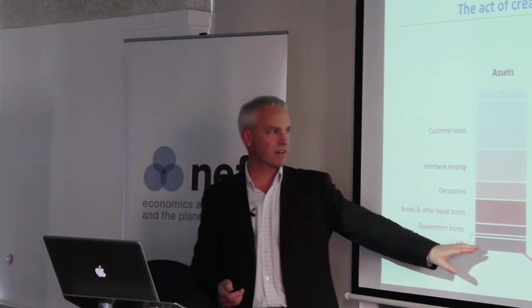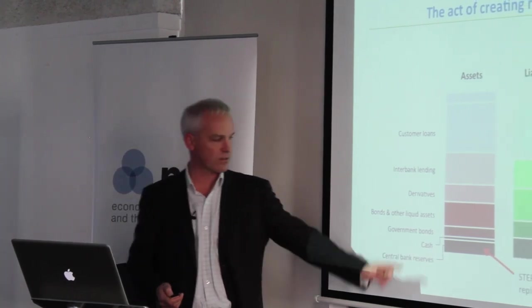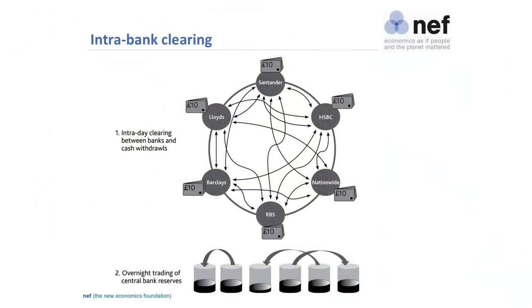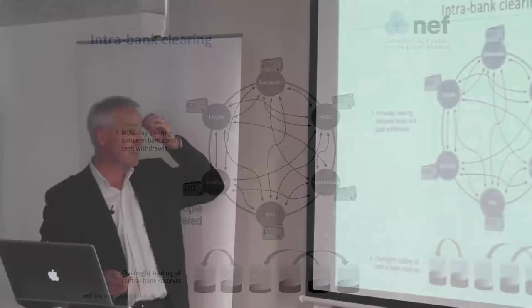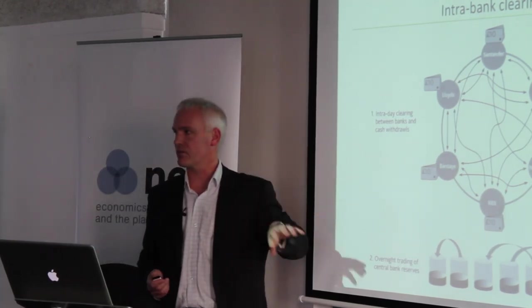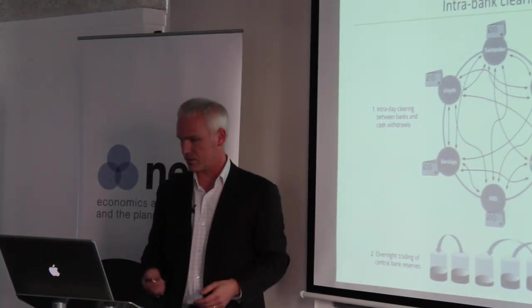It's vital that a bank is able to create deposits, pay them away using its central bank reserves, safe in the knowledge it can borrow back whatever reserves it needs. Under normal conditions, it can. This model of the interbank clearing system shows that reserves are always flowing between all the different banks' pots as they clear transactions throughout the day. At the end of the day, they ensure each has a sufficient liquidity position of central bank reserves, squaring that through interbank borrowing.